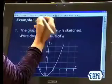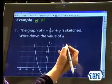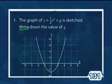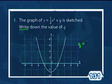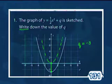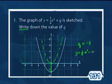Moving on to page 131 — this is a lovely way of giving you the picture and then saying, what must Q have been? The graph of Y equals a half X squared plus Q is sketched; write down the value of Q. It is definitely a parabola, and our normal parabola would sit at the origin. This one has been dragged downwards — according to the picture, dragged down by 3 units. So Q must have been minus 3, and my equation is a half X squared minus 3.